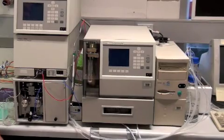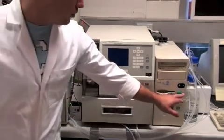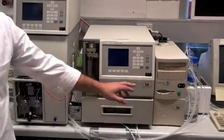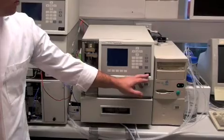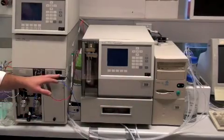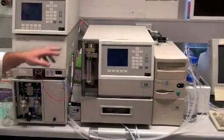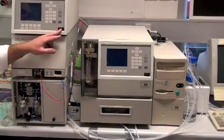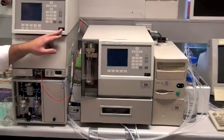The initial start-up procedure for this HPLC begins here at the computer with this button. It's then followed by the auto sampler with this switch. Then the photo diode array is turned on with this switch. And finally the controller, which controls the pump, is done with this switch.